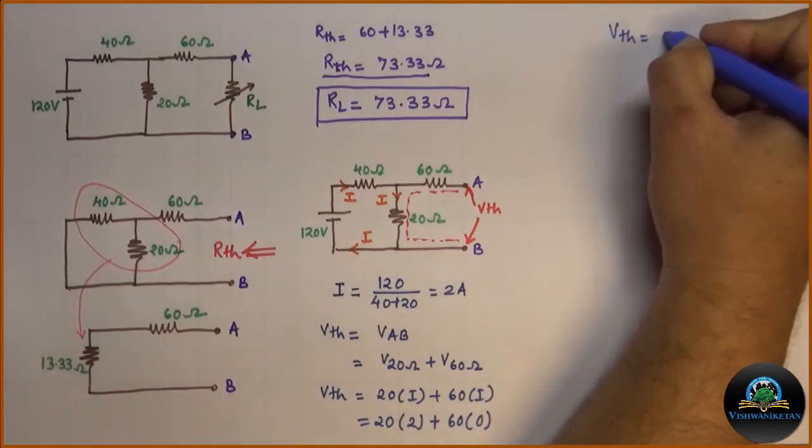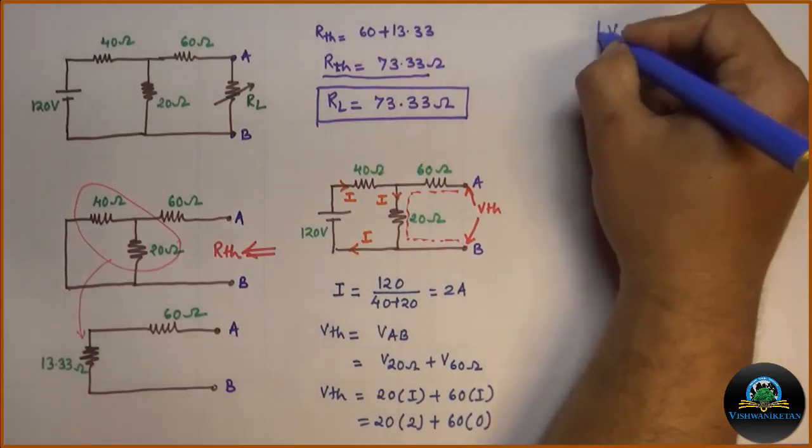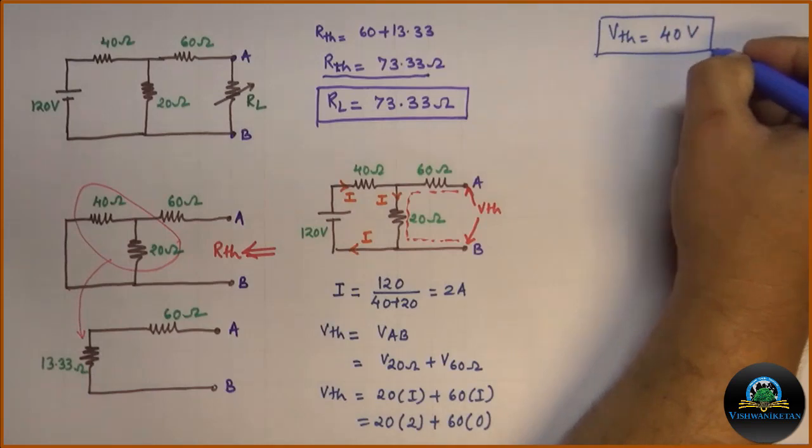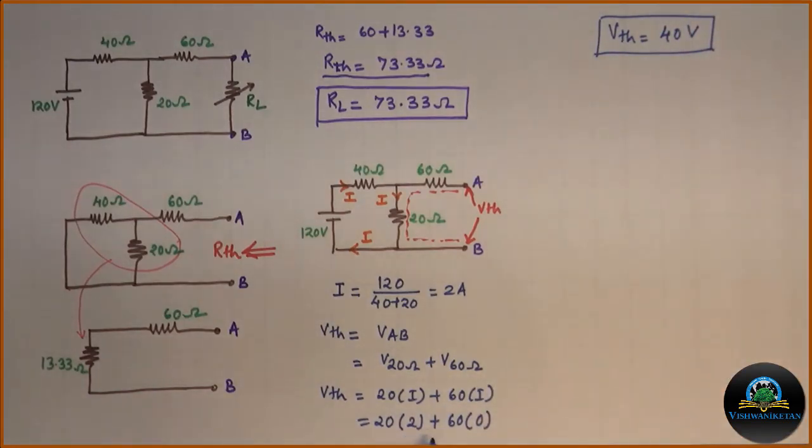Then we will get VTH as 40 volt. 20 into 2 is 40 volt, and 60 into 0 is 0.